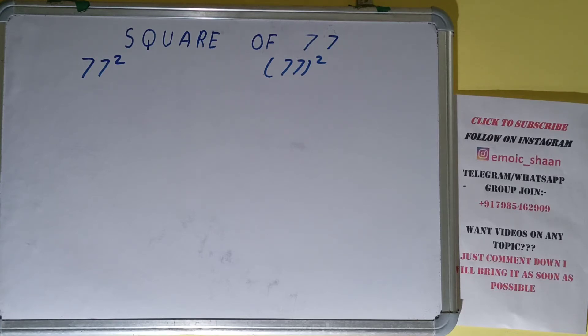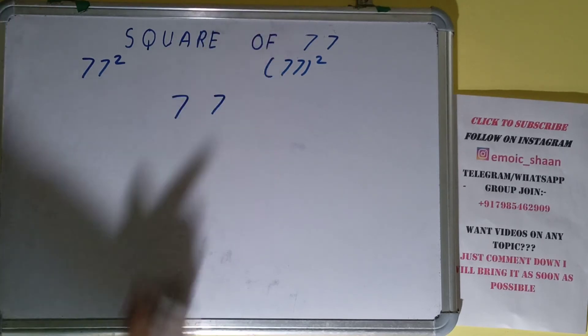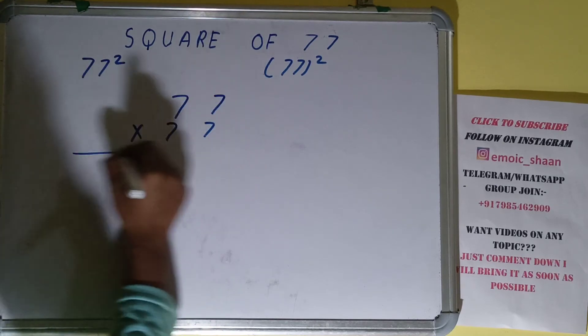Now moving on to the solution. Square basically means multiplying the number by itself. That is, the number over here is 77. To find the square of it, we need to multiply it by itself and do the normal multiplication.